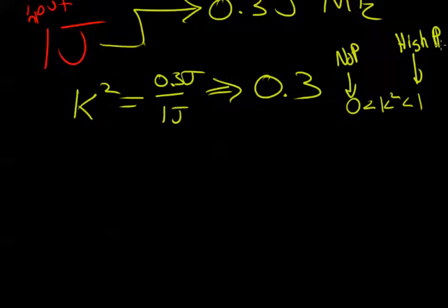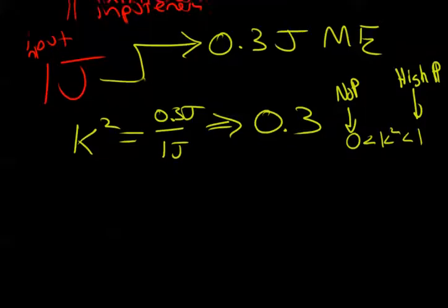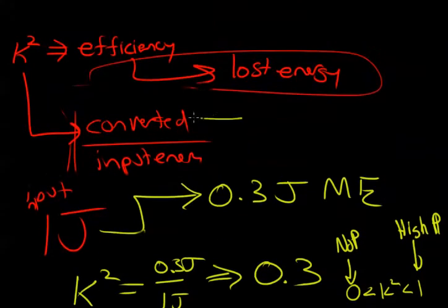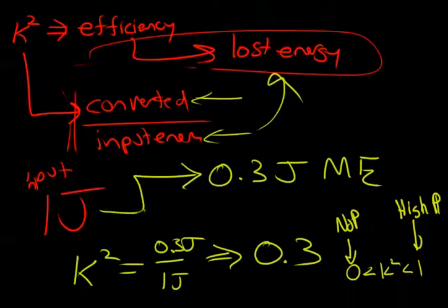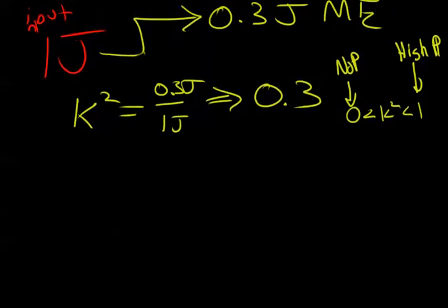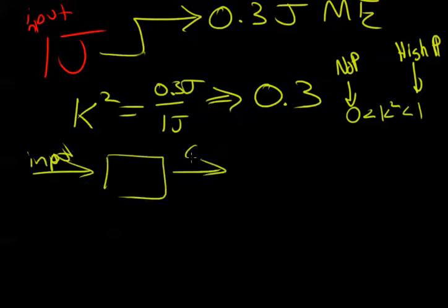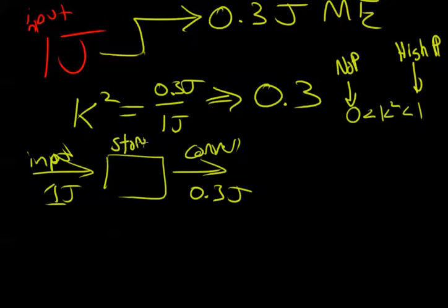So now we want to continue and discuss. We had converted energy, we had input energy. But what about lost energy? Where did the energy go? If it's inputted and we have converted 0.3, the input is 1 joule, then what happened to the rest? We can imagine the rest is stored 0.7 joule. It's stored as pure electrical energy.